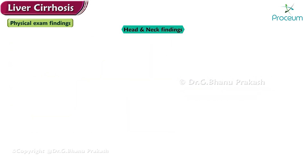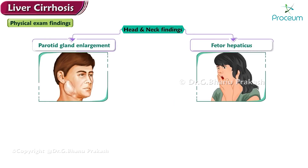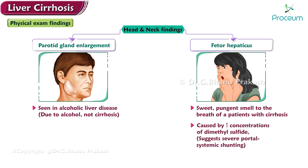Head and neck findings in patients with cirrhosis may include parotid gland enlargement and fetor hepaticus. Parotid gland enlargement is typically seen in patients with alcoholic liver disease and is probably due to alcohol, not cirrhosis per se. Fetor hepaticus refers to a sweet, pungent smell to the breath of a patient with cirrhosis, the presence of which suggests underlying severe portal-systemic shunting.